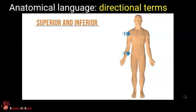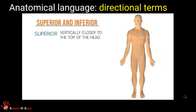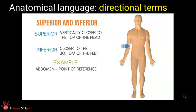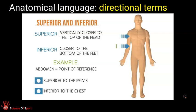When we need to describe the location of a body part as being above or below another body part, we use the terms superior and inferior. When a body part is superior, it is considered vertically closer to the top of the head in the anatomical position. A body part is considered inferior if it is closer to the bottom of the feet. For example, with the abdomen as the point of reference, we could say that it is both superior to the pelvis and inferior to the chest.